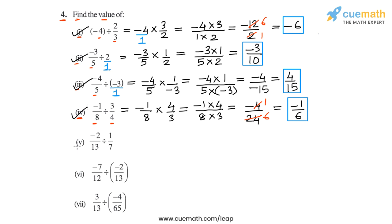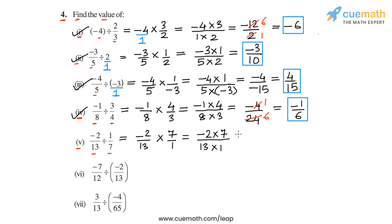In part 5, we have to calculate -2/13 divided by 1/7. We write this as -2/13 multiplied by the reciprocal of 1/7, which is 7/1. Multiplying the numerators gives -2 × 7 = -14, and the denominators gives 13 × 1 = 13, resulting in -14/13. So in part 5, the value of the expression is -14/13.